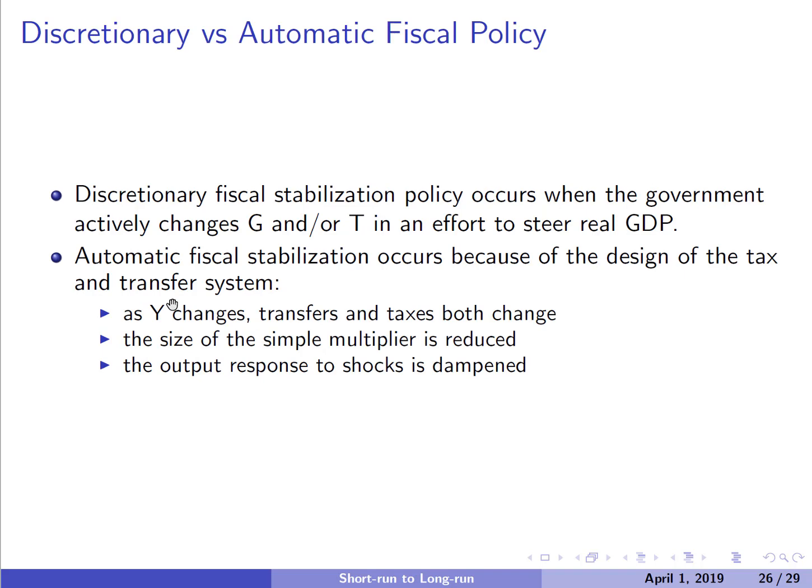The final topic is discretionary versus automatic fiscal policy. Discretionary fiscal policy is when the government actively changes either its purchases — capital G — or its taxes — capital T or the marginal tax rate little t — to steer real GDP back toward potential Y-star. But there is also built-in fiscal policy that causes automatic stabilization of the economy.